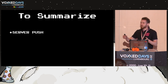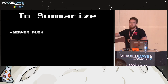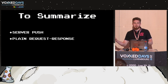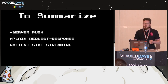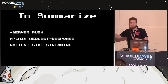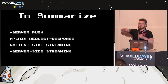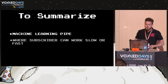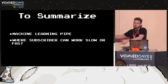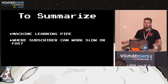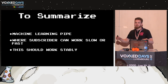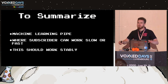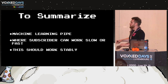To summarize from the communication perspective: we have plain server-side push when we push tile information, plain request-response which is the most common communication, client-side streaming when we send location updates on every step, and listening to the stream of other players' movement. Finally, we have a machine learning pipeline which can work slow or fast. We don't know at which point it becomes really slow, so we have to provide stability to avoid losing data about all players.